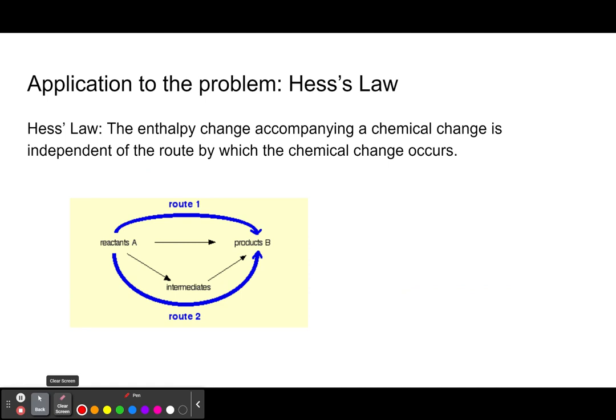You have to remember that enthalpy of formation is the heat change at constant pressure when one mole of a compound is formed from its constituent elements in their standard states. Enthalpy of combustion is when one mole of a substance reacts completely with excess oxygen, under standard conditions with all reactants and products in standard states. Now we apply Hess's Law to the problem. Hess's Law states that the enthalpy change of a chemical reaction is independent of the route by which the chemical change occurs. If we go from A to B, the energy change ΔH1 is the same as ΔH2 plus ΔH3. It doesn't matter what route it takes—it's the same enthalpy change, the same energy change at constant pressure.